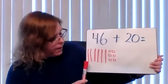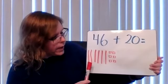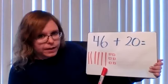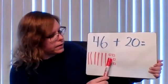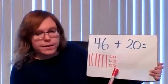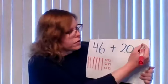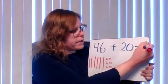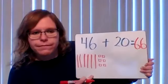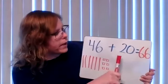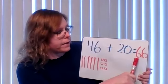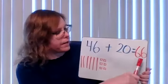We have, count with me, 10, 20, 30, 40, 50, 60, 61, 62, 63, 64, 65, 66. So our answer is 66. So 46 plus 20 equals 66, which means we have six tens and six ones.